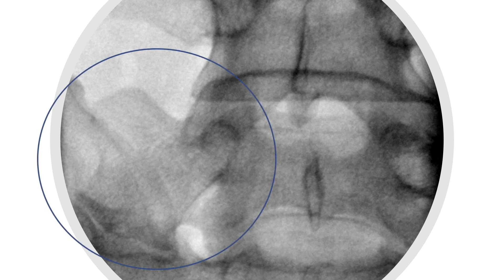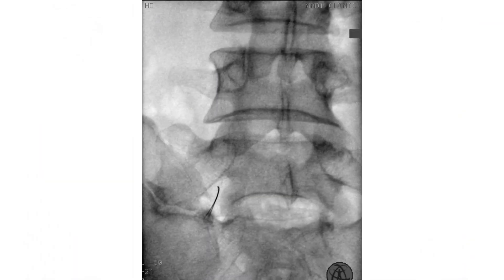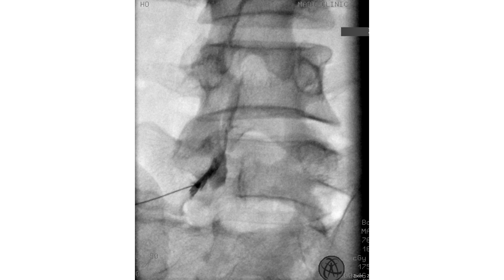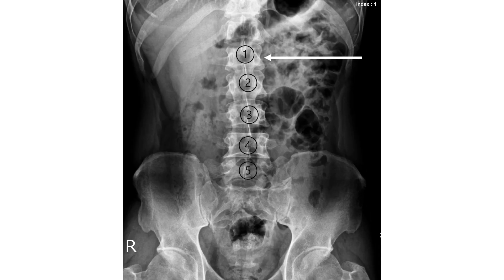The transitional vertebra is characterized by its abnormally large transverse process at the lumbosacral junction. I chose the red arrow target point as expected and put contrast to confirm the foramen and epidural space. It is a simple case of a transitional vertebra. I count down the level from the white arrow level, and L5 is the transitional vertebra.